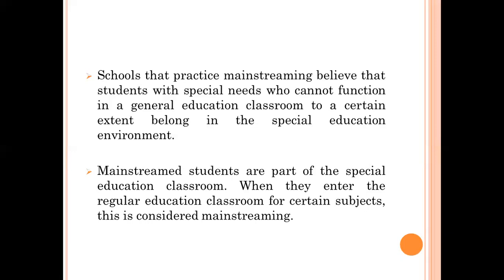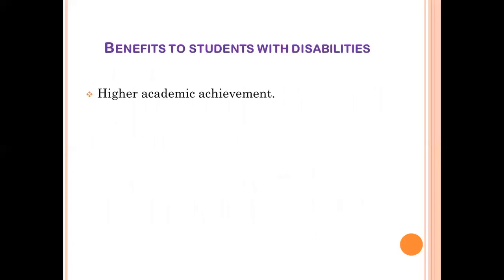Many studies have revealed that mainstreaming has many advantages — benefits for both disabled children and non-disabled children. The first important benefit for students with disabilities is higher academic achievement. Studies and research show that students with disabilities are more effective when they are not excluded. When given a resource room, they receive direct instruction from teachers and special education trainers, which increases their academic skills and develops their abilities.